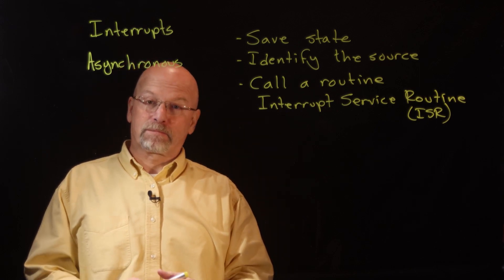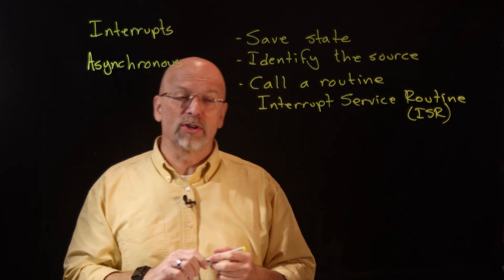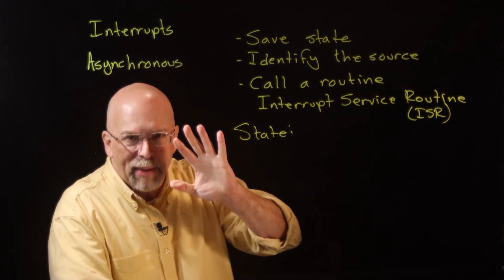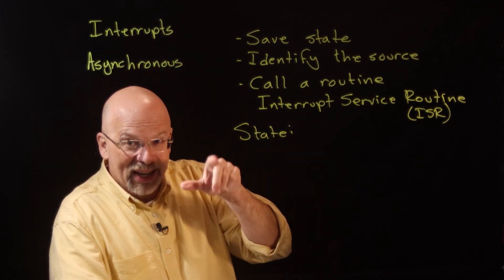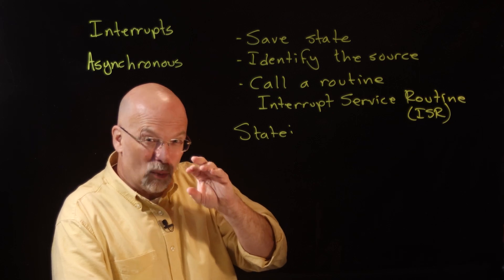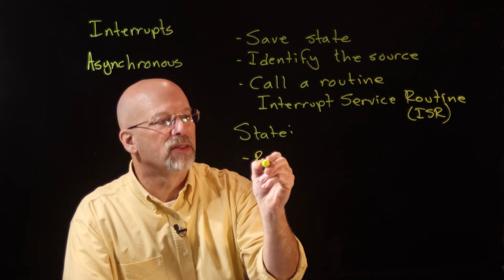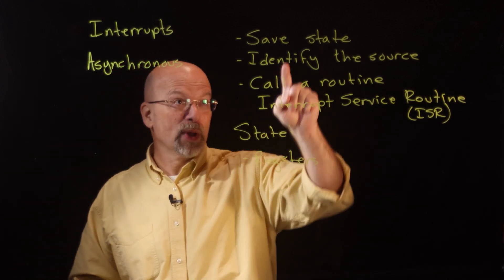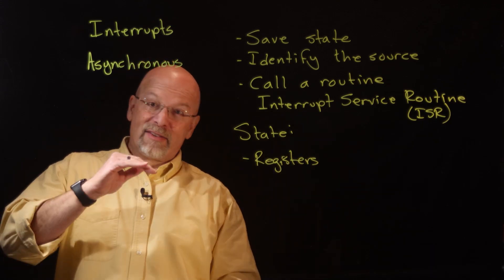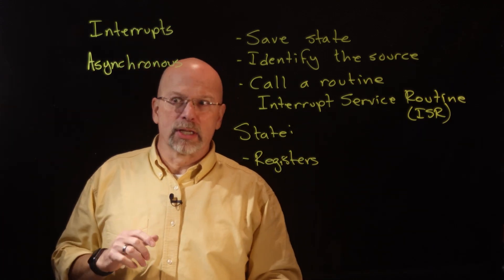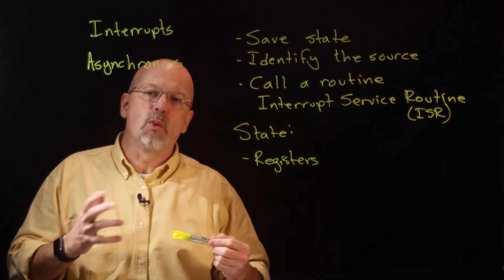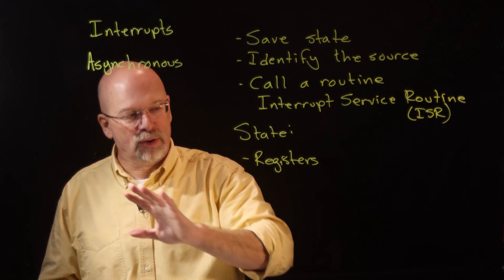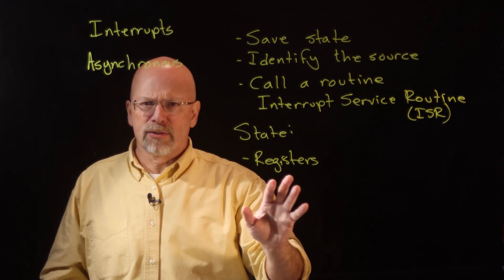What are the things we need to do in order to save state? The state primarily — think about the code. We talked about the memory hierarchy, and where does all the real work get done? It gets done in the registers. So saving state basically means saving the registers. Since this is happening asynchronously and we have no control over when this is happening, we don't have any mechanism in the application that's being interrupted to take care of saving the registers.